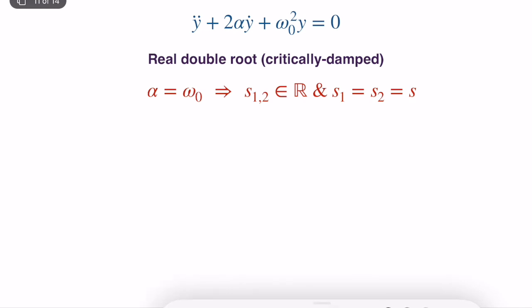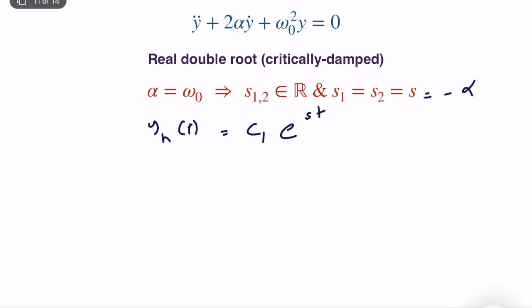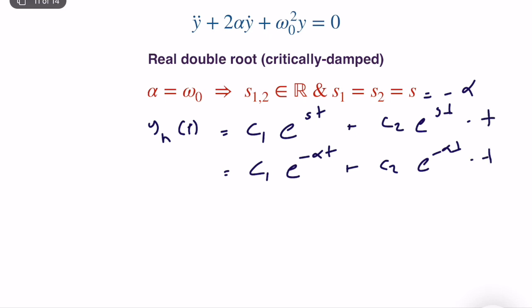Case 2: Alpha equals omega-zero. S1 and S2 are real but equal — S1 = S2 = S = −α. The homogeneous solution is: C1·e^(−αt) + C2·t·e^(−αt). We cannot leave both terms as plain exponentials because they are not independent. As in a differential equations course, we multiply the second basis function by t to handle the repeated root case.